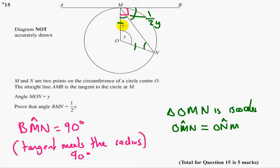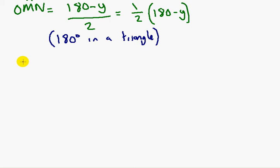We need to take away angle OMN, which we've just worked out, away from 90 to leave us with angle BMN, which should leave us with half Y. Hopefully. So 90 minus half lots of 180 minus Y.